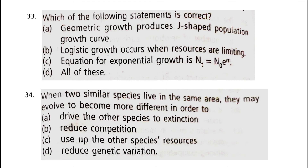Next: when two similar species live in the same area, they may evolve to become more different in order to — the correct answer is option B: reduce competition. According to the mechanism of resource partitioning supported by MacArthur, if two species compete for the same resource, they could avoid competition by choosing different times for feeding or different foraging patterns. Two species evolve to become different to reduce competition so that both species can coexist.